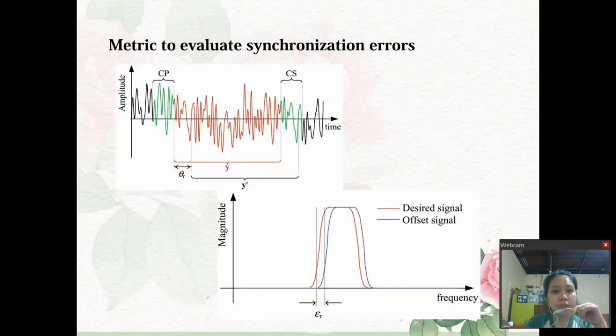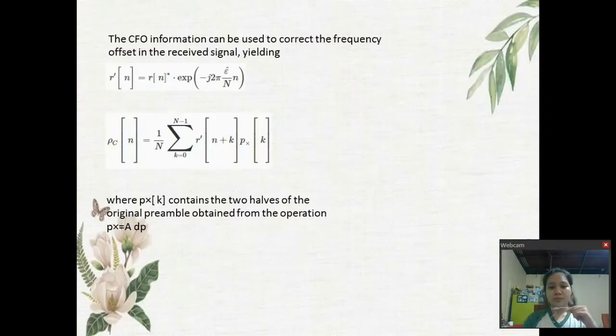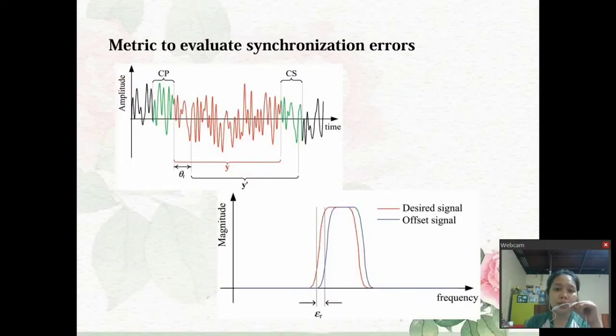Let's move to the metric to evaluate synchronization errors. The synchronization algorithms used to estimate the time and frequency offset might result in residual errors which are termed here as theta sub R. This figure depicts the residual time offset theta R within the CP and CS interval and the residual frequency offset as phase rotation within one sub-carrier bandwidth. The misalignment in time and frequency synchronization leads to performance degradation. A metric to evaluate the influence of the residual synchronization errors is necessary.